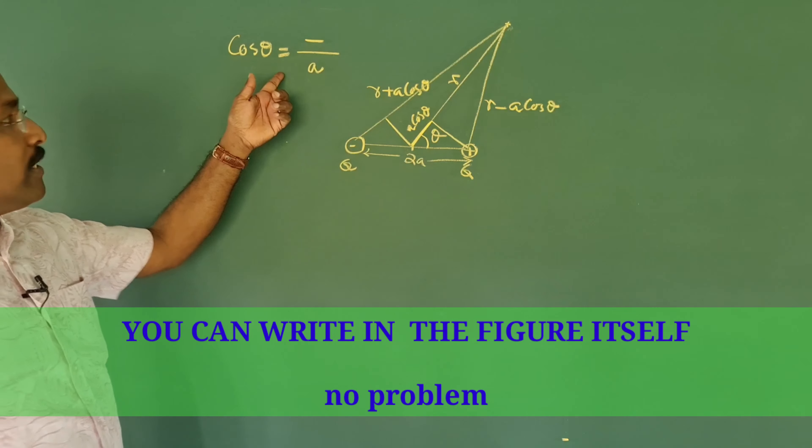I suggest you memorize this equation well and study it in detail. The potential depends on three factors: the dipole moment p, the angular position of the point (theta), and the distance r to the point.